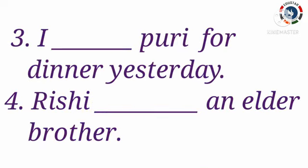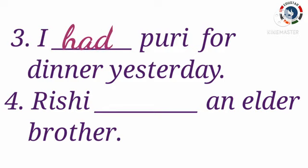Next one: I ___ puri for dinner yesterday. Children, here the word 'yesterday' indicates an action that happened in the past. So it is past tense, and we use had to talk about what happened in the past. The answer is had. I had puri for dinner yesterday.